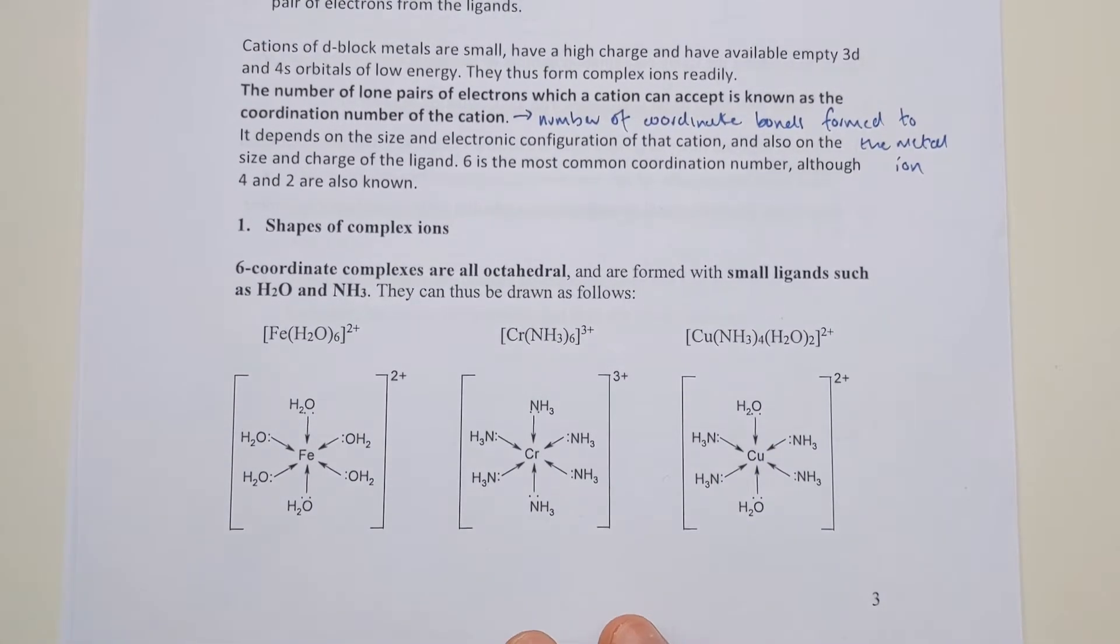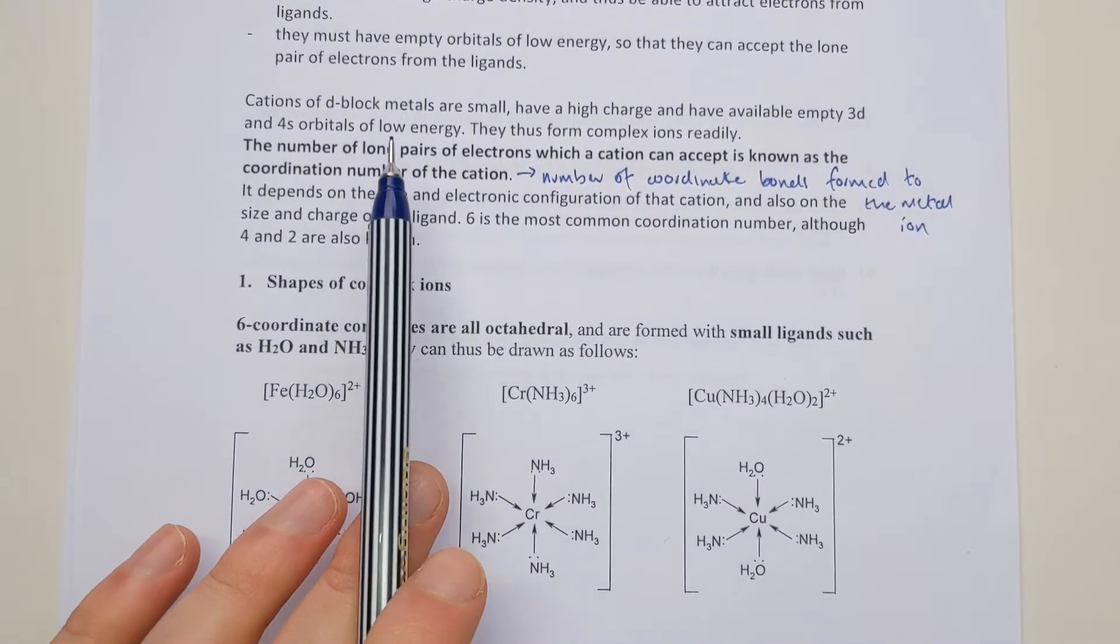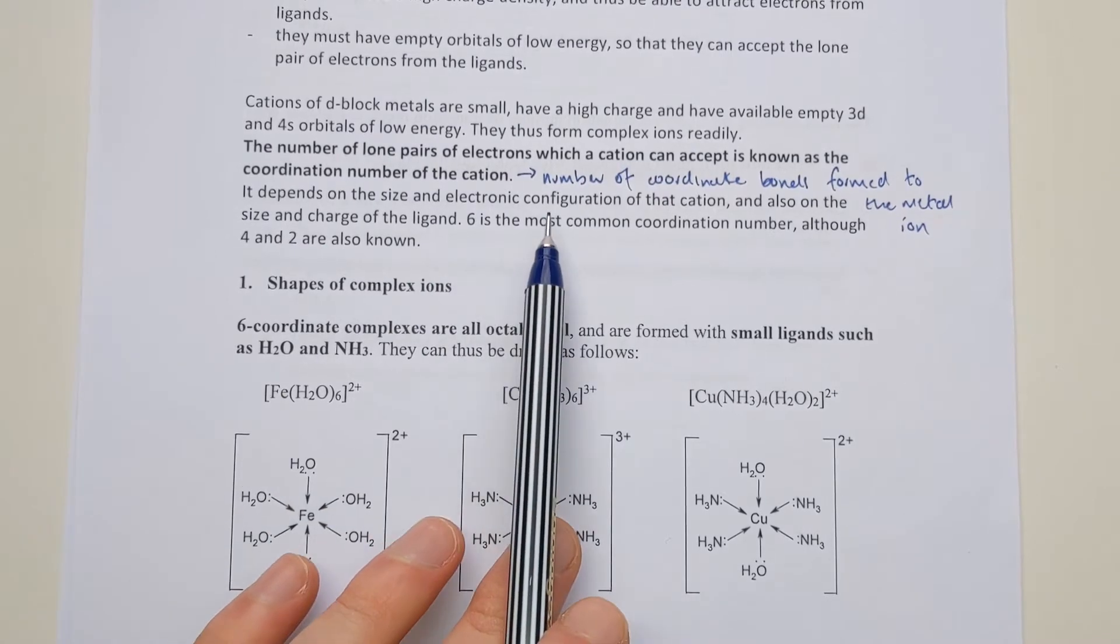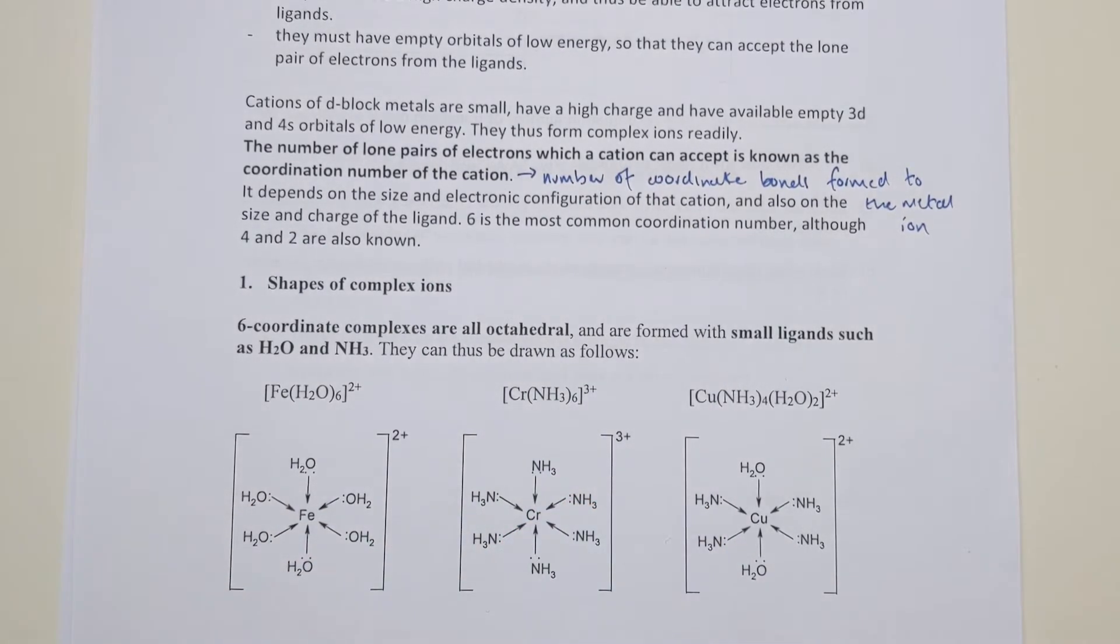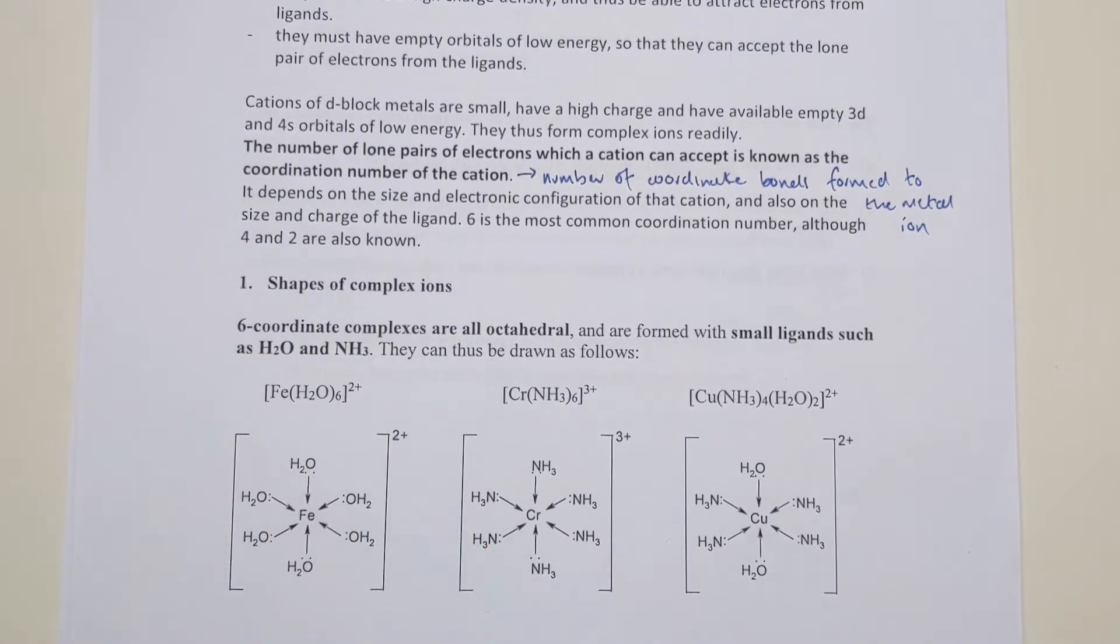In terms of what determines what coordination number you get, there are two factors. It depends on the size and electrons of the cation. For example, a really small cation might not be able to fit so many bonds around it, but a really big one might be able to take a few more. Also the size and charge of the ligand. If you've got really big ligands, they might be too crowded to fit many around the same atom. If they're really small, you can fit quite a few. Those are two factors to consider.